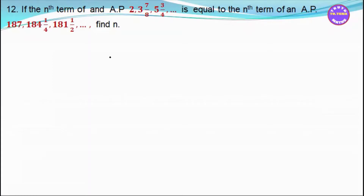Exercise 4.2, number 12. Number 12: if the nth term is u_n, let's take a sequence where u_n is equal to n.